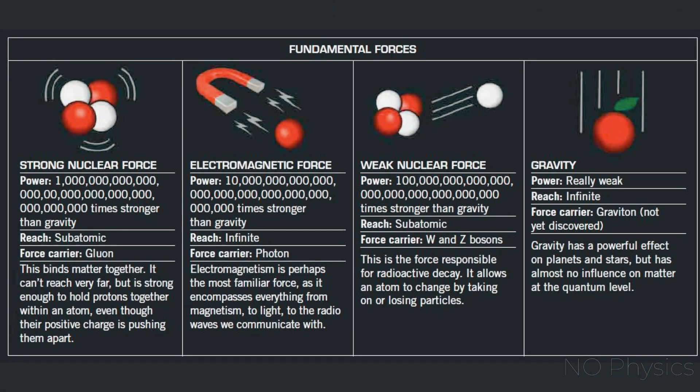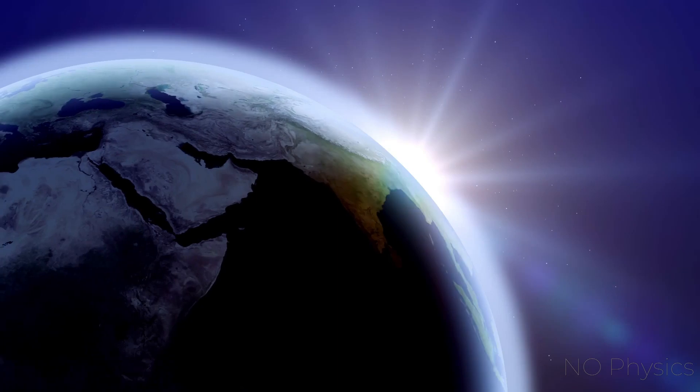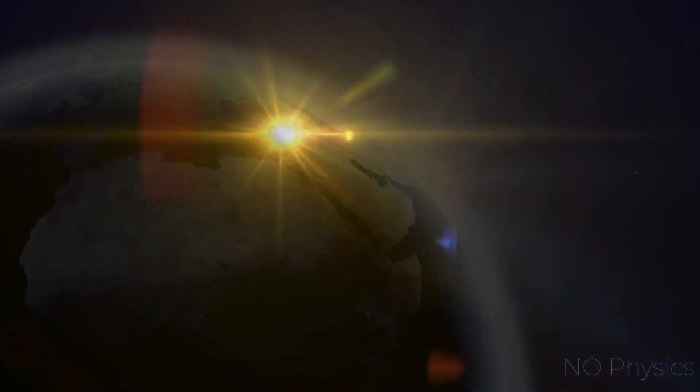Gravity is by far the weakest of four fundamental interactions. It is what keeps us from falling off the spinning earth. It is what keeps the earth in its orbit around the sun.